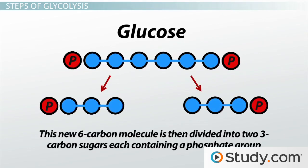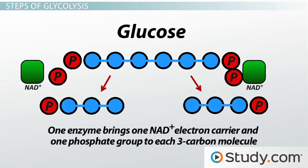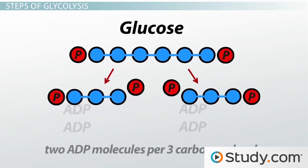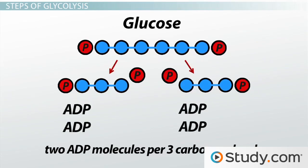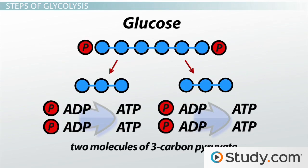This new six-carbon molecule is then divided into two three-carbon sugars, each containing a phosphate group. These two molecules are identical, and what happens next happens to both of them. One enzyme brings one NAD+ electron carrier and one phosphate group to each three-carbon molecule. Each electron carrier picks up electrons, becoming reduced as NADH. The phosphate group is added to the molecule. In subsequent steps, two ADP molecules per three-carbon molecule come by to pick up all the phosphate groups. This creates four ATP molecules total, or four units of chemical energy, and leaves us with two molecules of three-carbon pyruvate.